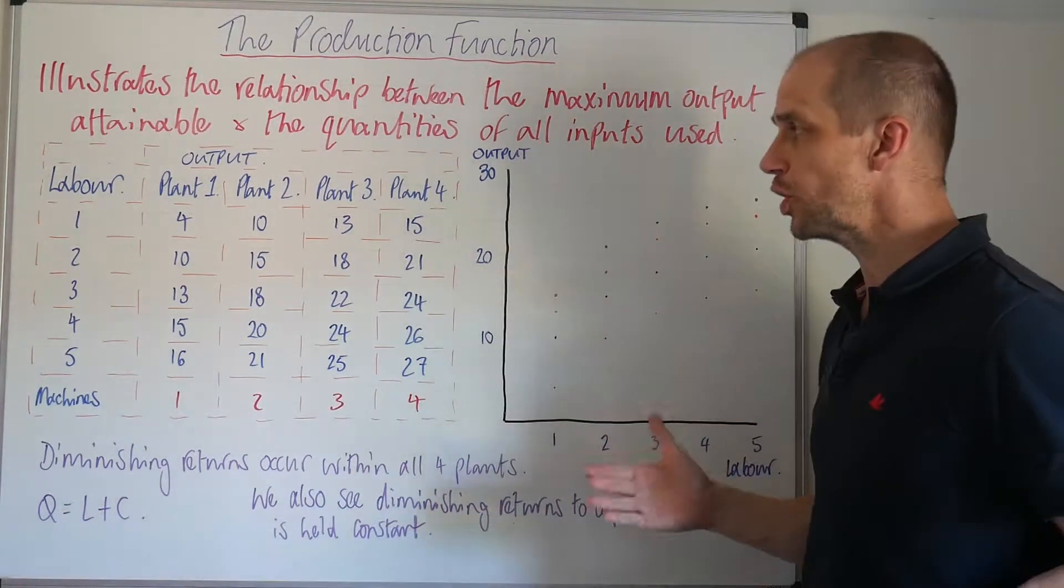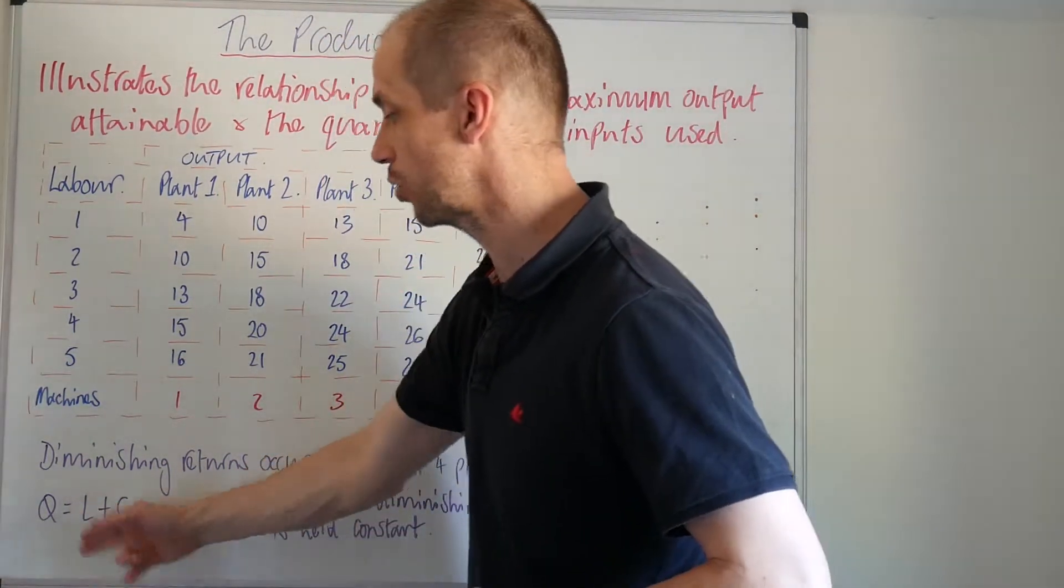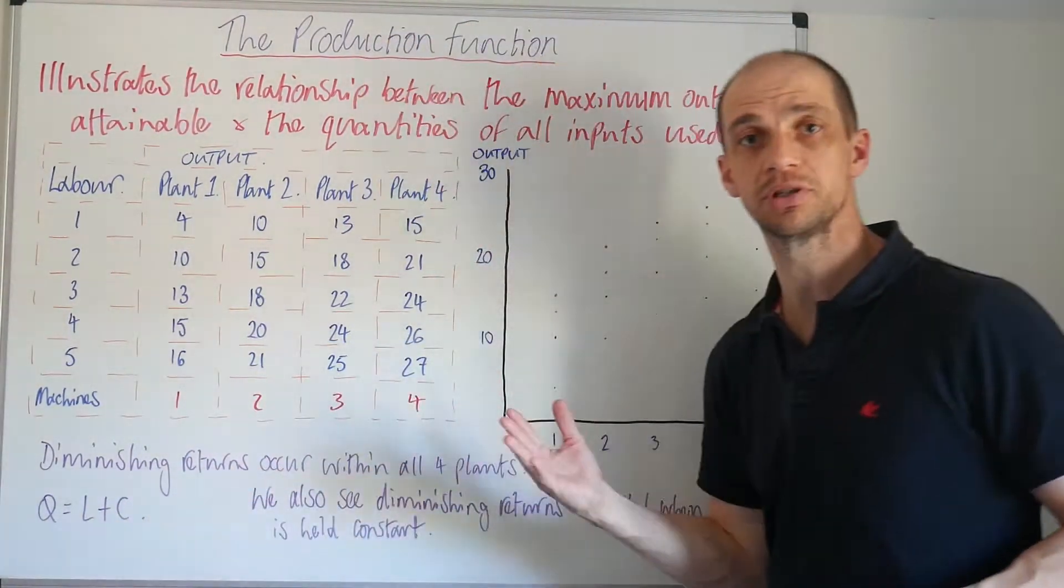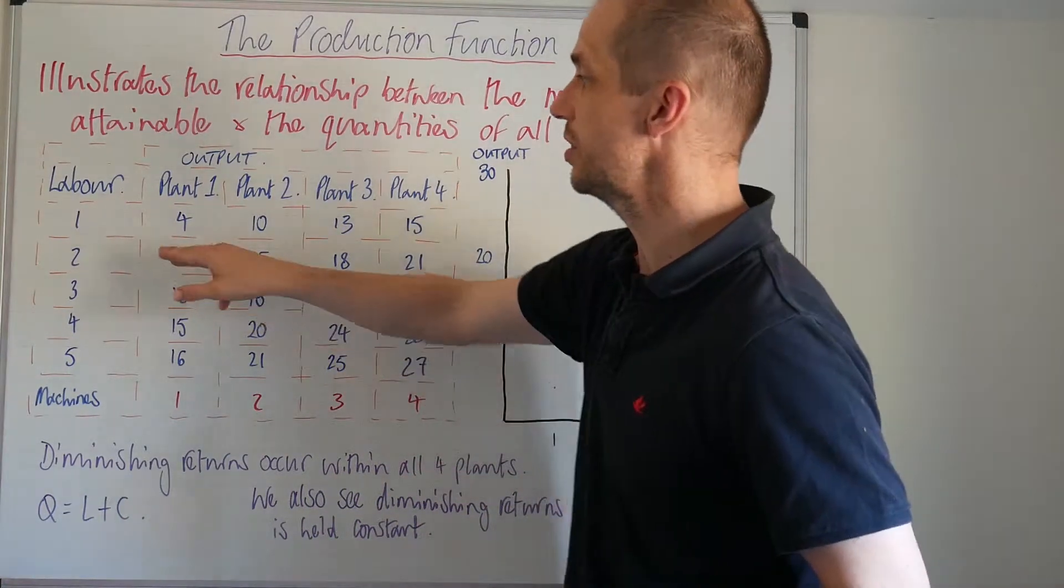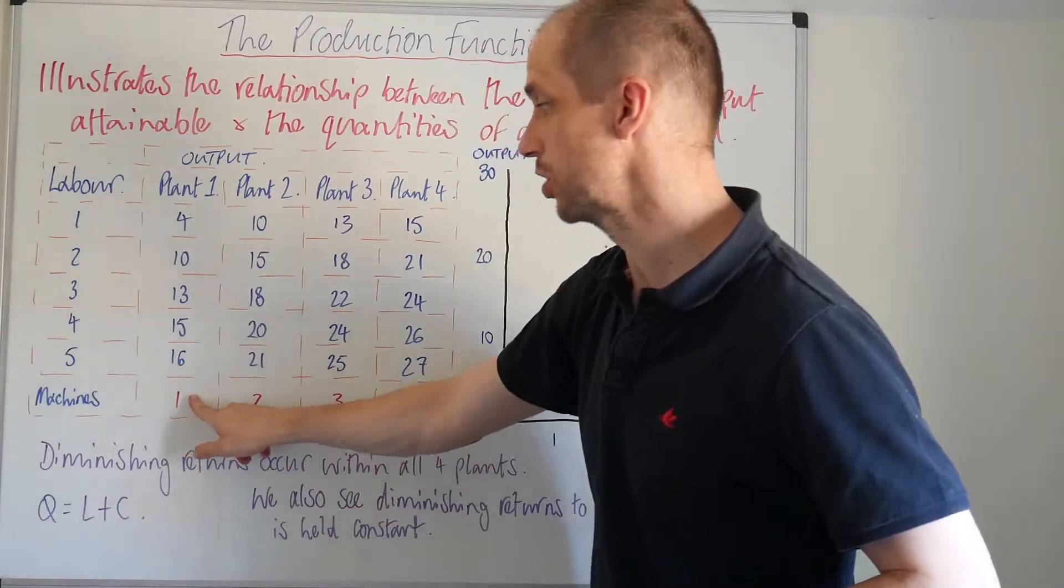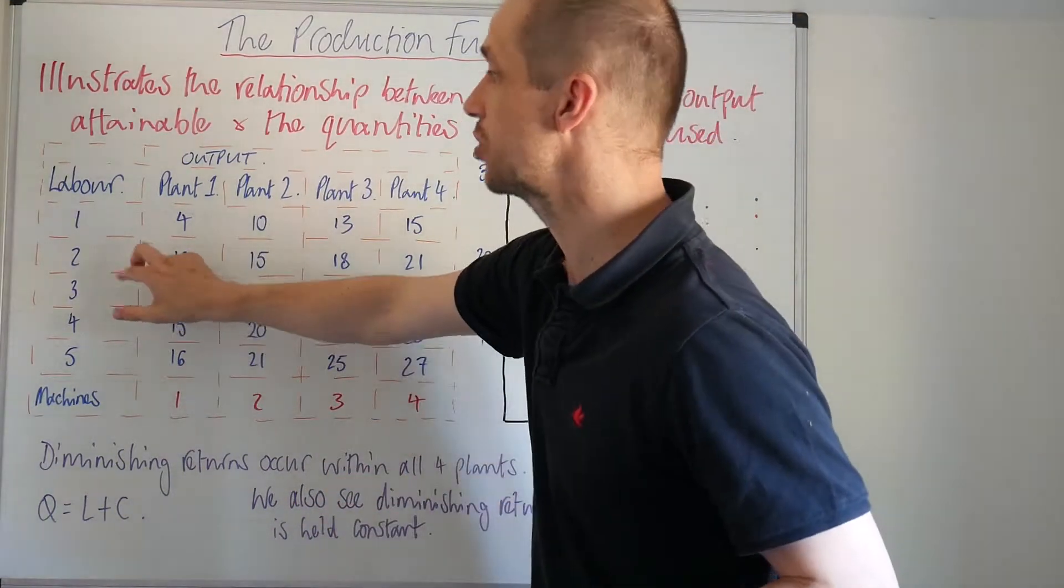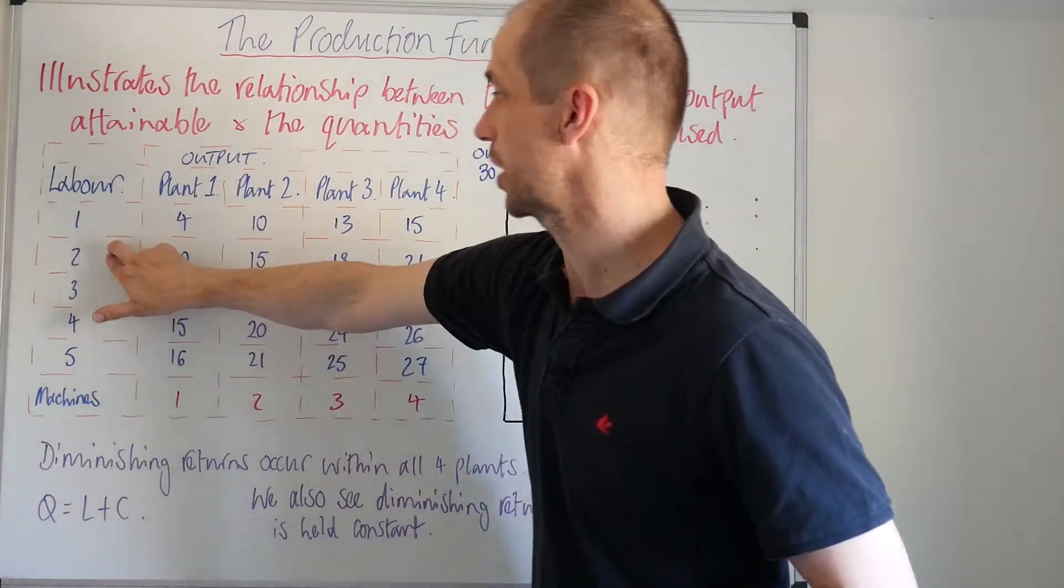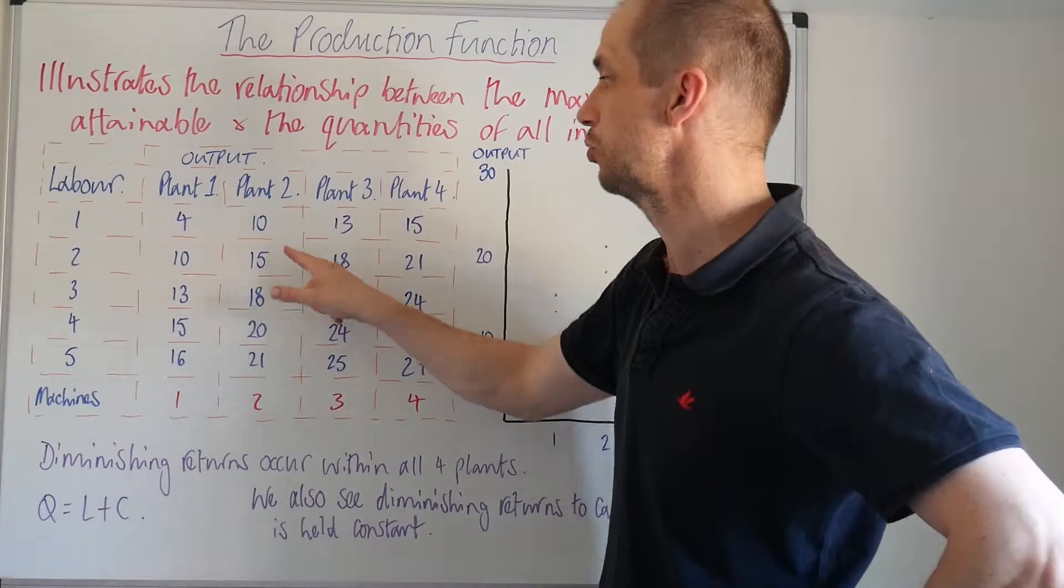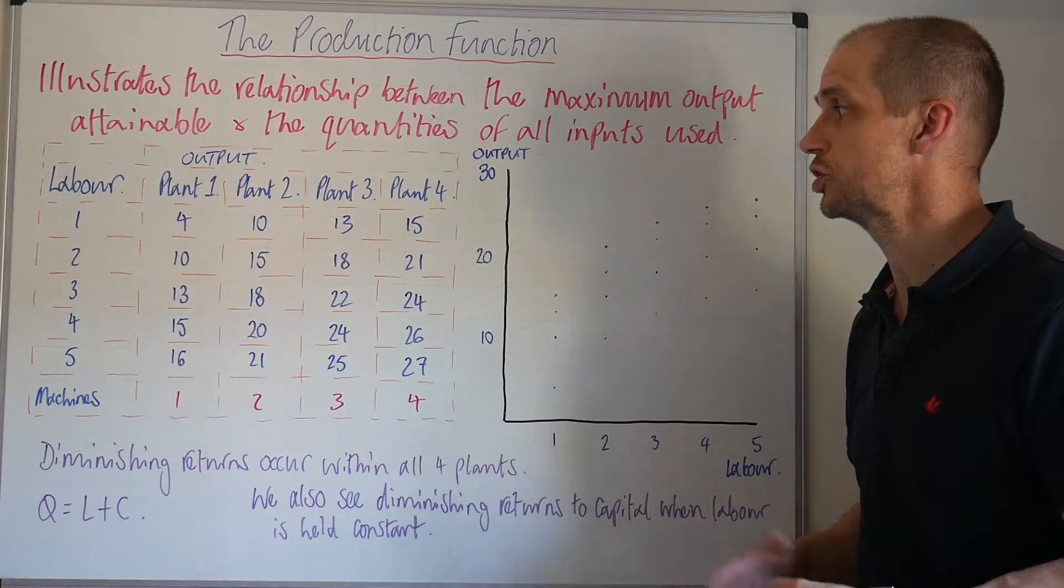Now the production function itself we could actually just express as a nice simple equation which would be that the quantity of the output equals labor and capital that is actually utilized. So within this example we'd be able to say one labor and one capital good will equal an output of four. So if we increase our labor and our capital goods so that we use two labor and two capital, well our output Q would be 15. So the production function really expresses this relationship quite nicely.